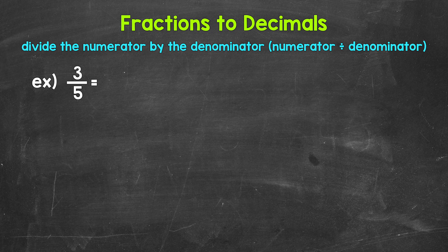When we convert a fraction to a decimal, we can divide the numerator — the top number of the fraction — by the denominator, the bottom number of the fraction. So for 3 fifths, we can set this up as 3 divided by 5.